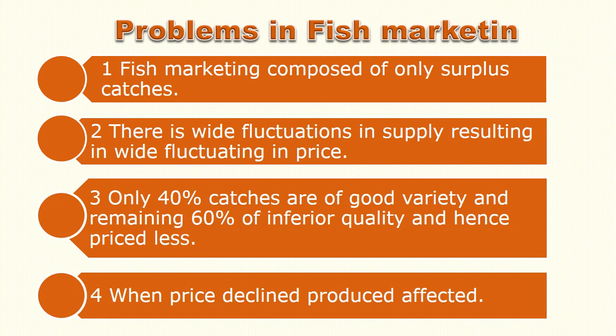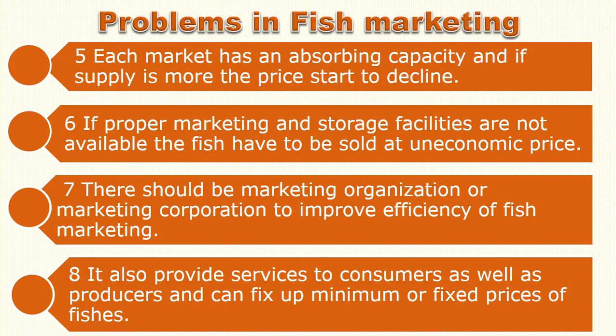The problems in the fish market include: fish market is composed of only surplus catches. Wide fluctuation may occur because fresh fish like Catla and Mrigal become spoiled after half an hour to one hour. That is why fishermen sometimes sell at a low price due to spoilage. Remaining catches are 40% food variety and 60% inferior quality, hence the price is less. In the marketing system, the middleman gets the benefit; when the price declines, the producer is affected. Each market has an absorbing capacity, and if supply is more, the price starts to decline.